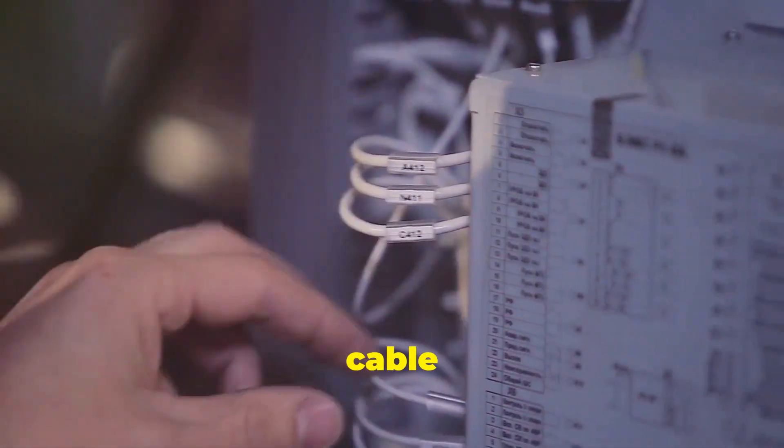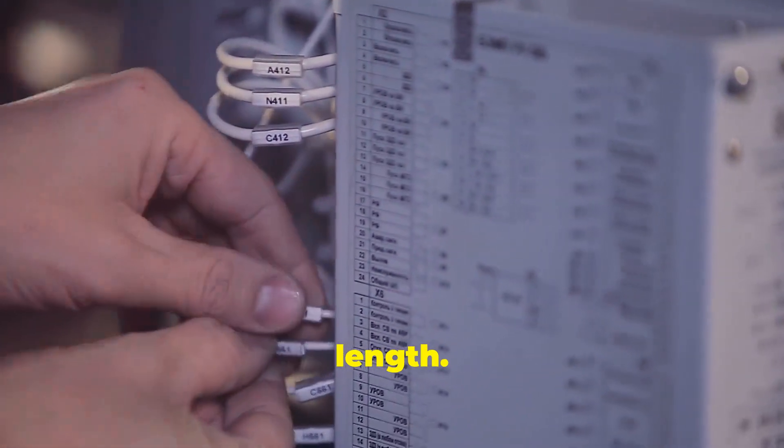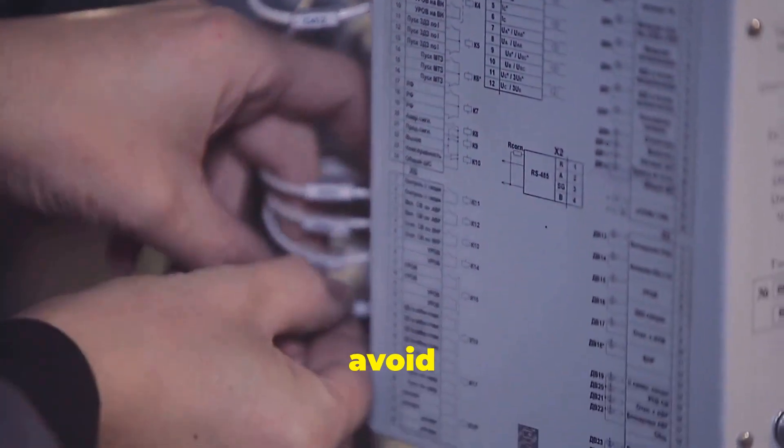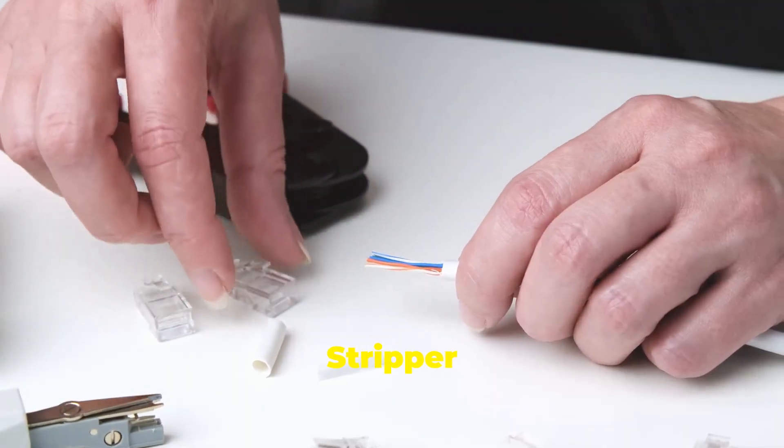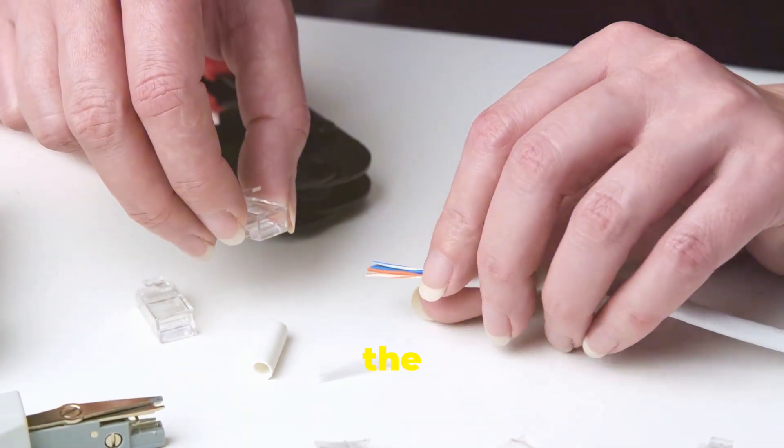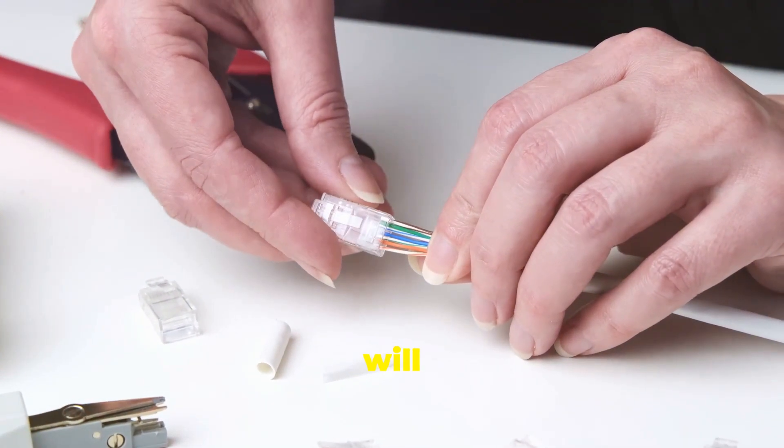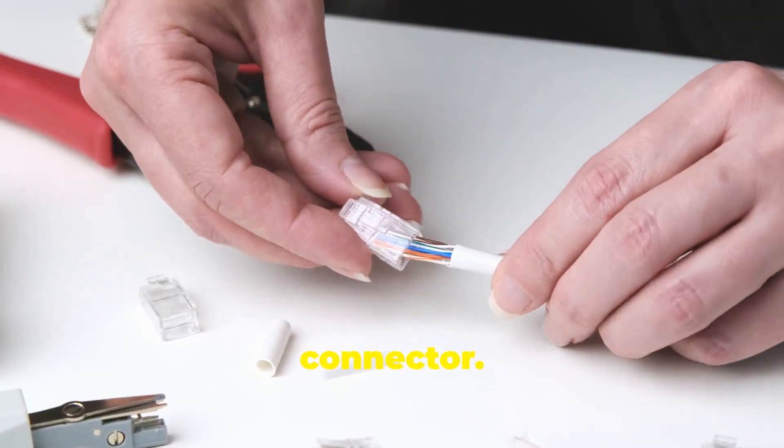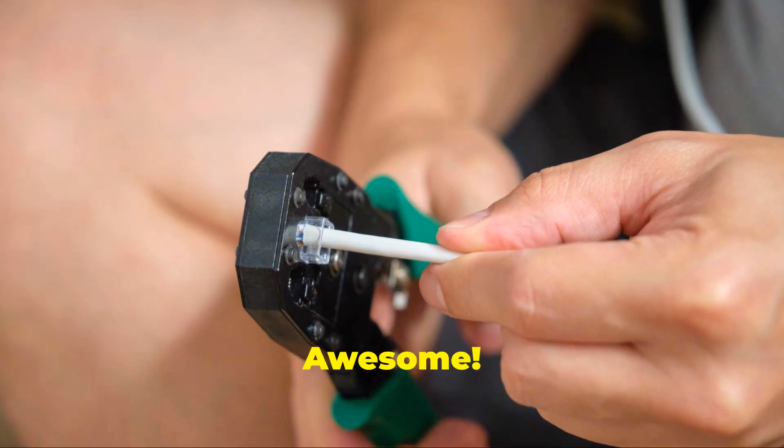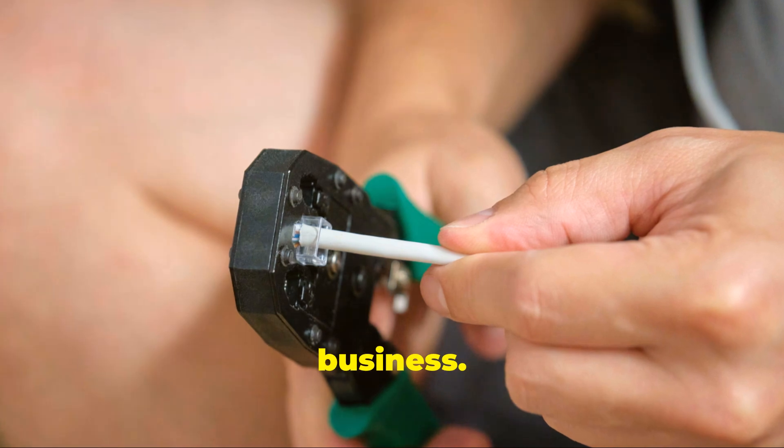Wire stripper: this tool helps you remove the outer insulation from the ethernet cable. A clean strip will make it easier to insert the wires into the connector. Got everything? Awesome. Now let's get down to business. With all your tools and materials ready, you're set to start crimping and creating your own custom ethernet cables.